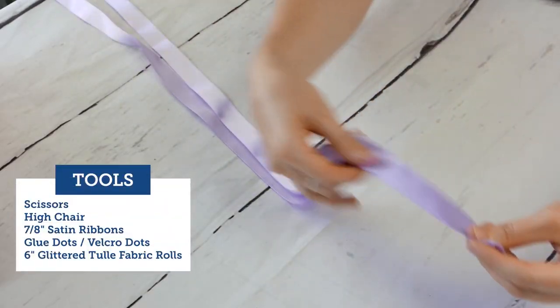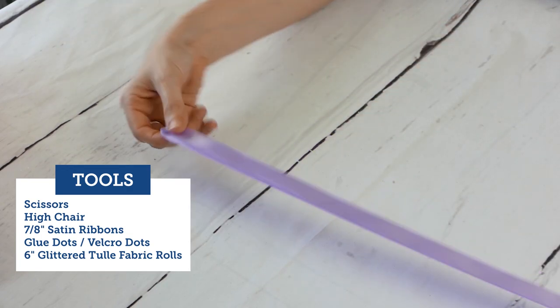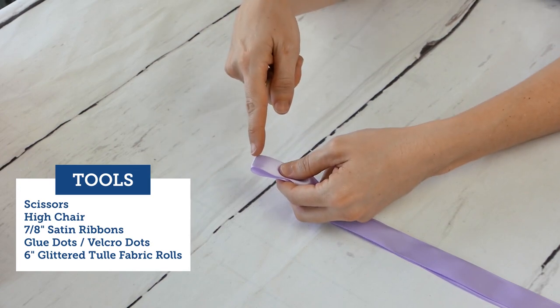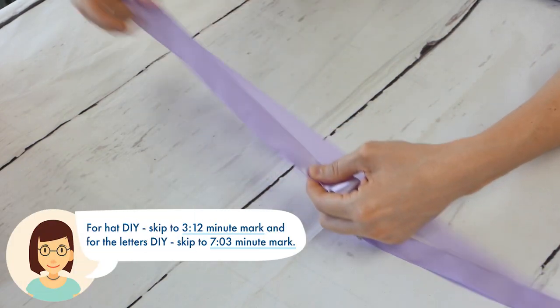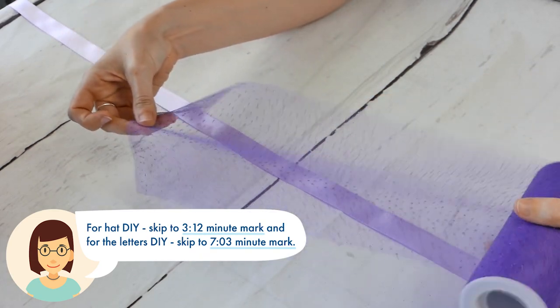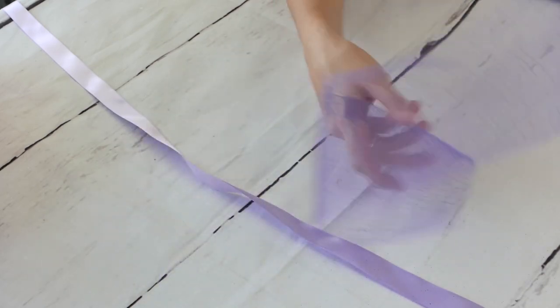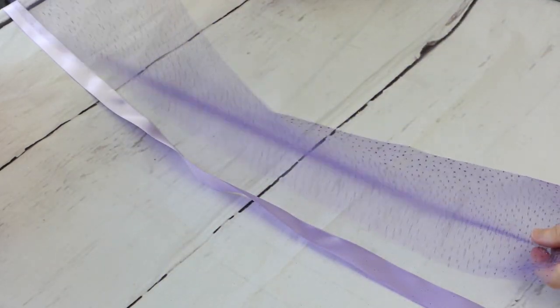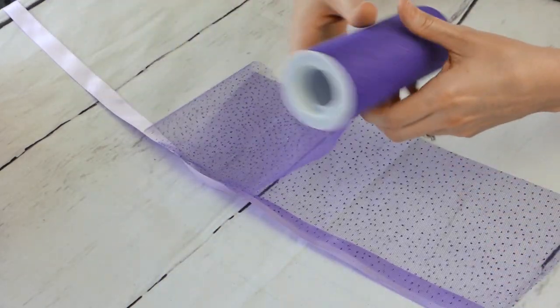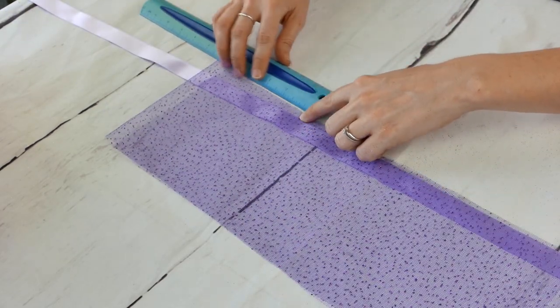Let's start with our satin ribbons. This is a 7/8 inch lavender satin ribbon. They come in different colors. We're actually going to be using blush, lavender, ivory, purple, and fuchsia. We're starting with this ribbon that goes all the way around the outside of the tray for the actual high chair. What we measured ours to be is 6 foot 7 inches. Make sure that you measure it and leave at least 6 inches to a foot on each side so you can tie it later.